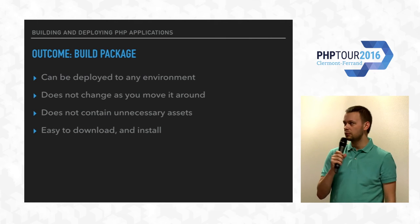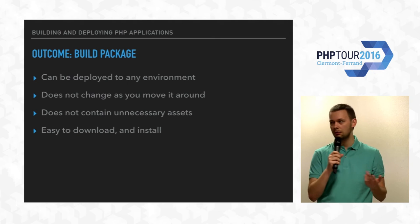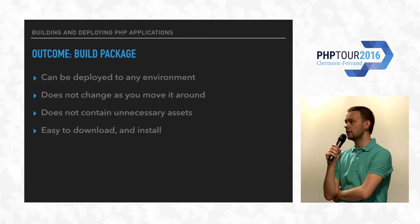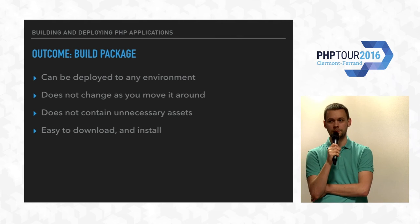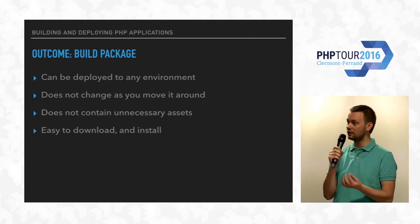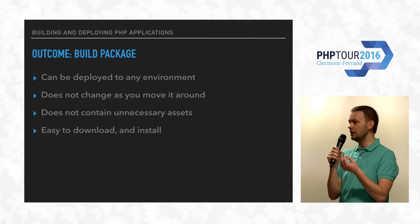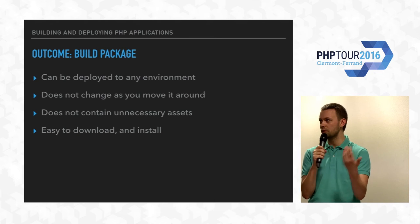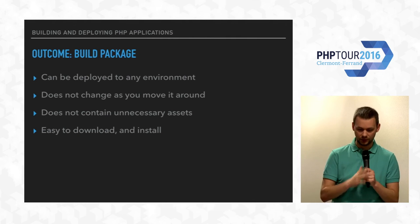The outcome of the whole build process is a build package that can be deployed to any environment, because it's stored somewhere. The important part is that it won't and should not change as you move it around — it shouldn't matter whether you're deploying to QA, staging, or production. It shouldn't contain any unnecessary assets, so it's lightweight. It's also easy to download and install because everything was already installed by your CI service when the build ran. All you need to do is download and extract.